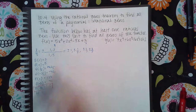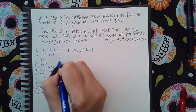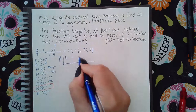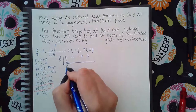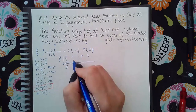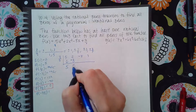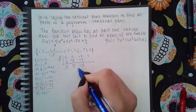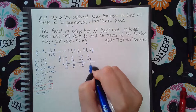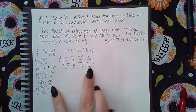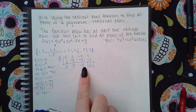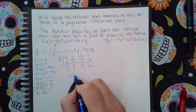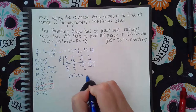In my synthetic division I'm going to have three-fifths, and then all my coefficients in descending order. Three-fifths of 5 is positive 3, giving 5. Three-fifths of 5 again is positive 3. Three-fifths of negative 5 is negative 3, and I get remainder zero as expected. What I have left is 5x² + 5x - 5.